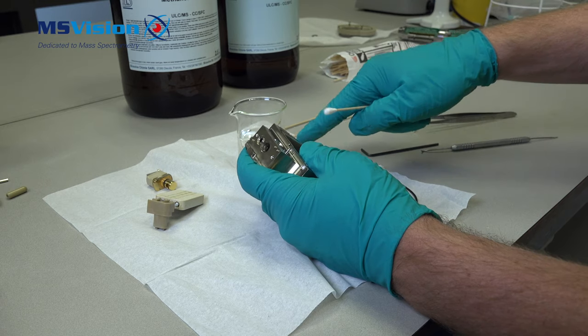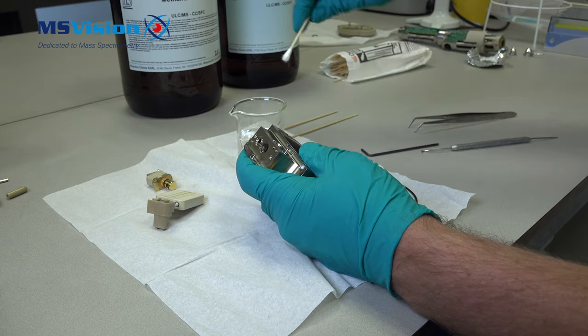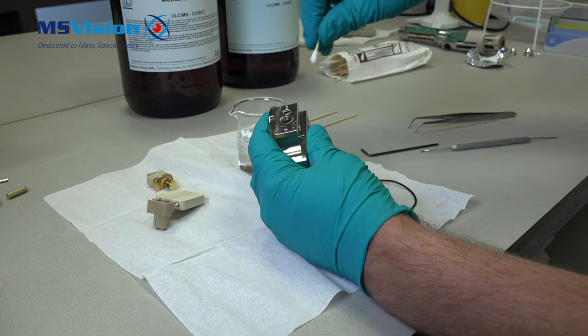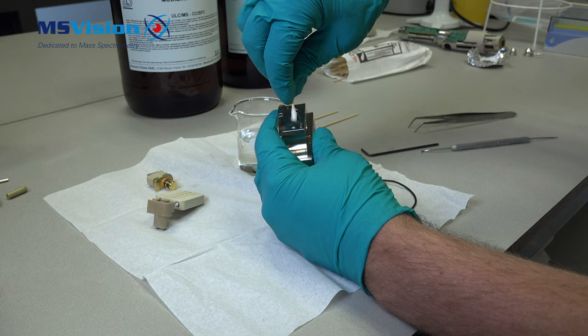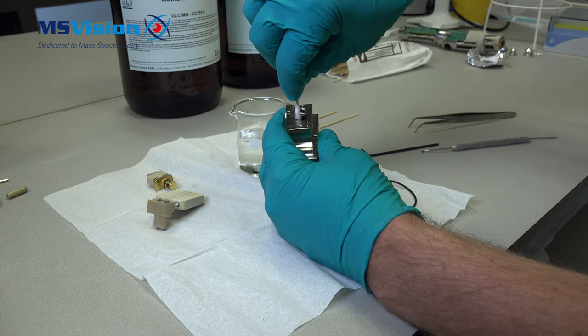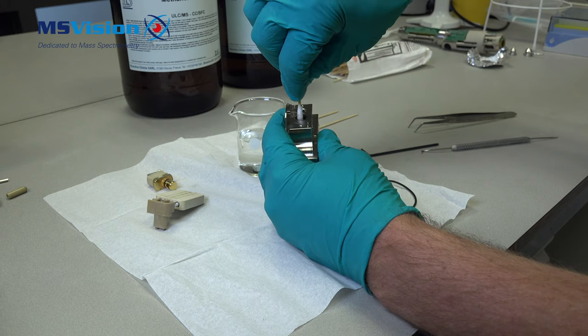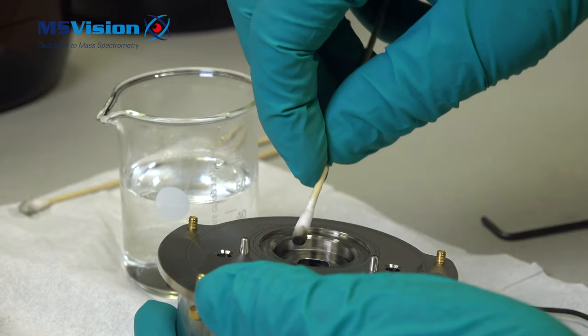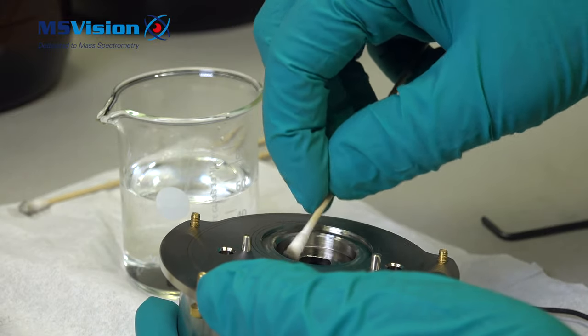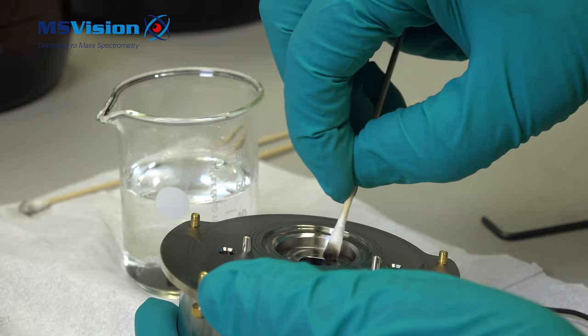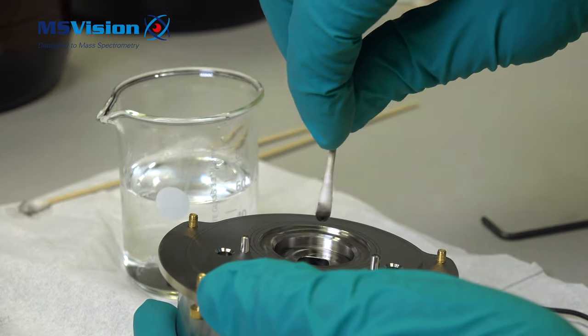To clean it use formic acid and water. Remove most of the dirt you can see, especially inside the block behind where the cone sits. Make sure you use a wooden cotton swab because the formic acid will dissolve plastic ones. Inside the apple shaped hole has to be critically clean. Take care that you don't leave any cotton fibers in here because one fiber is enough to result in source charging.